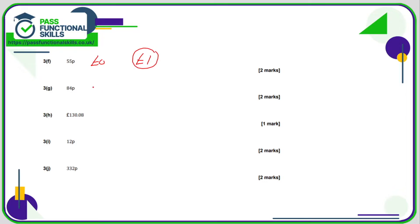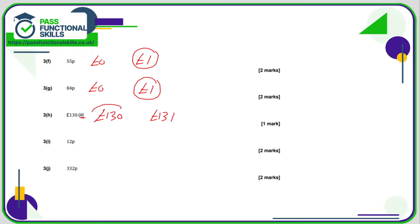Eighty-four pence is between zero and one pound, but it's closer to a pound because it's greater than 50p, so we round up to a pound. £130.08 is between 130 and 131 pounds; 8p is less than 50 so we round down to 130. Twelve pence is between zero and one pound; as 12 pence is less than 50 pence we round down, so to the nearest pound that's zero pounds.